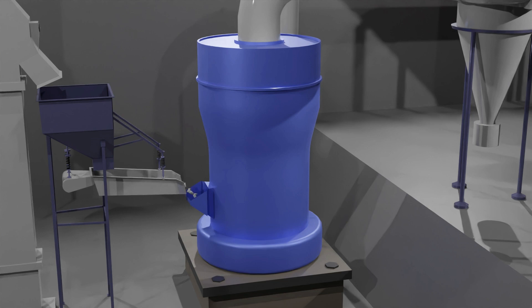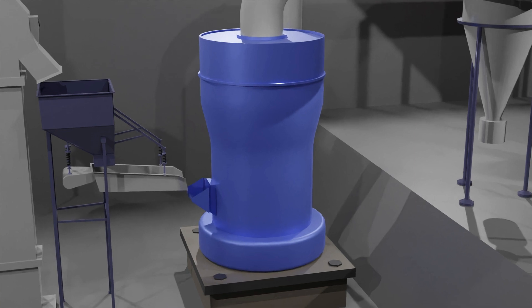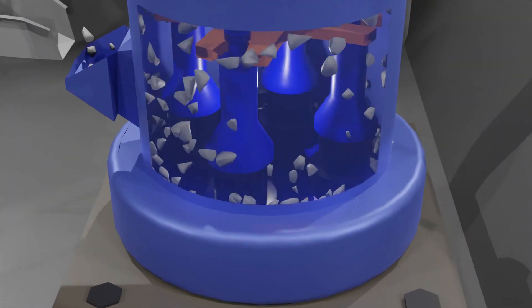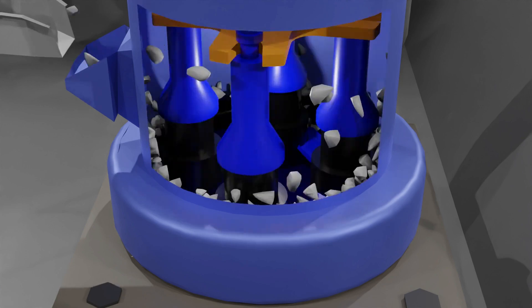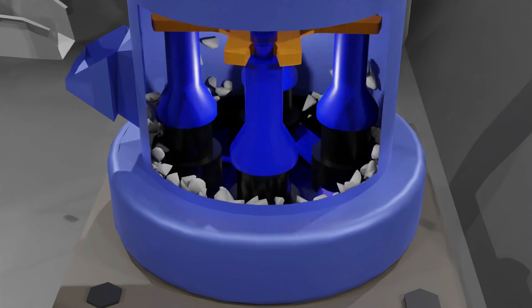The Raymond mill is composed of a host, an analytical machine, a fan, a finished product cyclone collector, and grinding roller. These grinding rollers roll outwards which produces centrifugal force and stones are crushed.